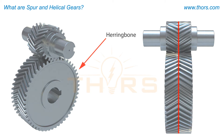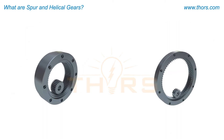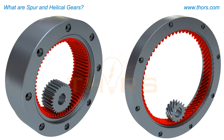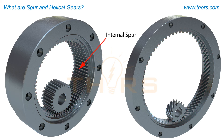The next type, internal gears, have teeth cut into the internal surface of a ring. Internal gear teeth can be manufactured with either spur or single helical teeth.